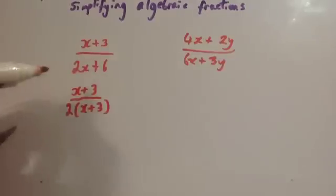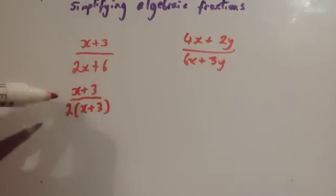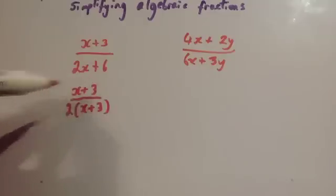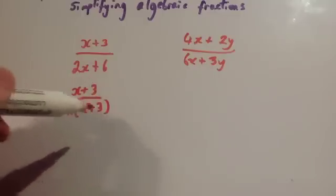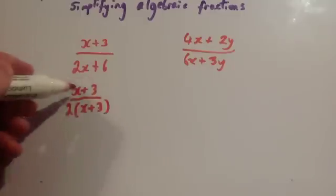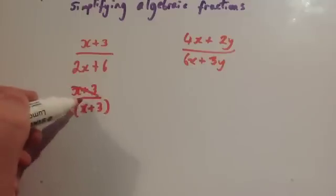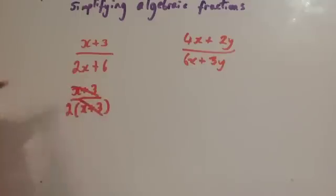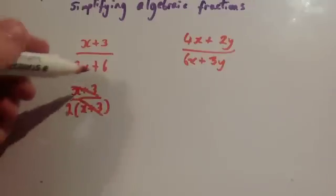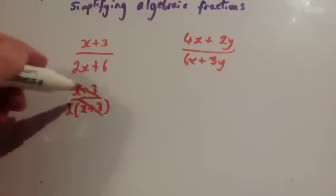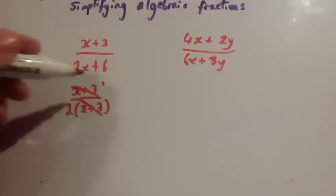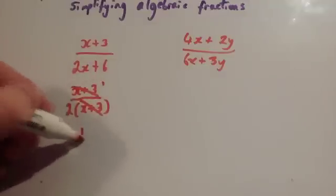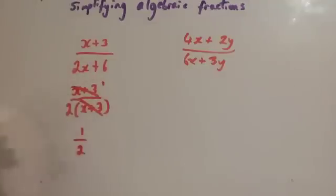As you'll notice, you've got the numerator x plus 3, and the denominator is 2 bracket (x plus 3). So this x plus 3 will cancel with x plus 3 — x plus 3 divided by x plus 3 is 1 — so you're going to get 1 over 2, which is a half.